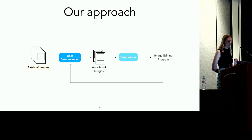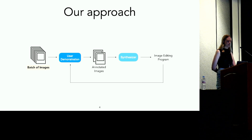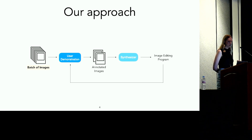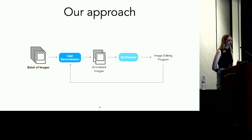Those annotated images are then passed as input to a program synthesizer that finds a program in a neuro-symbolic image editing DSL matching the user's demonstration. The synthesizer should output a program that, given an image from the school recital, returns a cropped version of that image featuring just Alice's daughter and the violin. After synthesizing a program, we apply it to all the images in Alice's batch. She can then look through those edited images and check if they match her task, and if not, she can perform additional demonstrations to clarify.